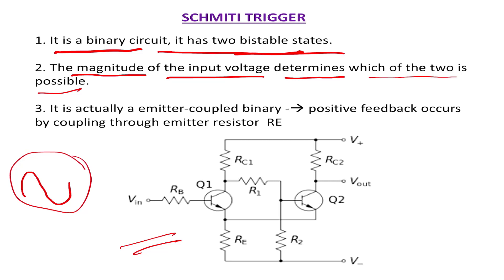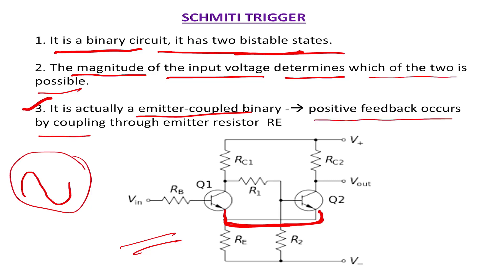It is actually an emitter-coupled binary. The emitter-coupled means it is connected to the emitter — this is an emitter-to-emitter connection. This binary circuit is emitter-coupled. Positive feedback occurs by coupling through emitter resistance RE.